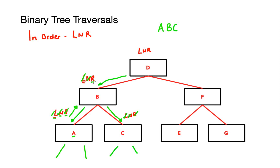Because I've done all the rules at B, I move up to node D — the root node — and check the L part of D off. I've now traversed the full left subtree of D. The next step is to complete the node rule, so I write D down as the next letter in my list.